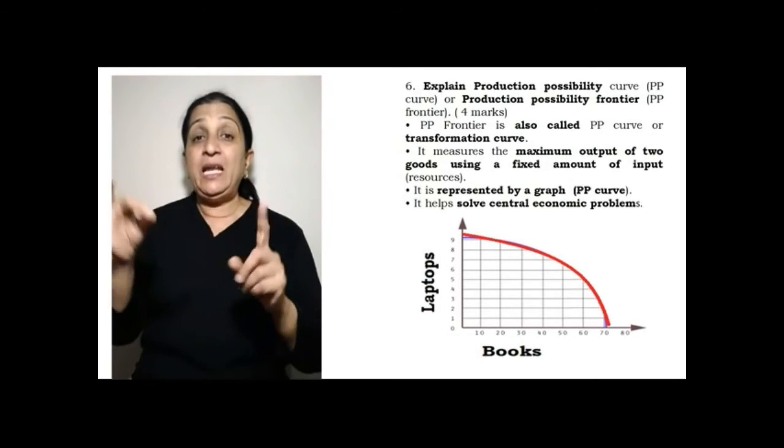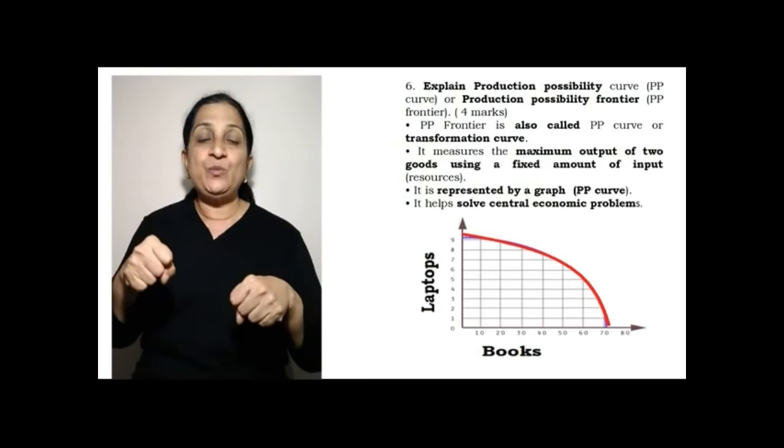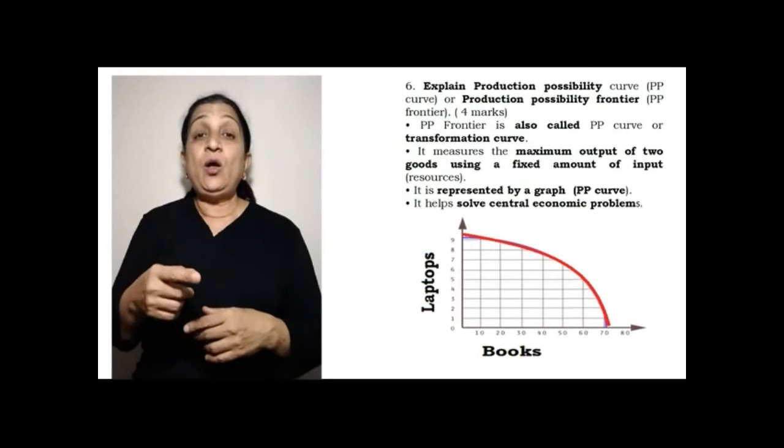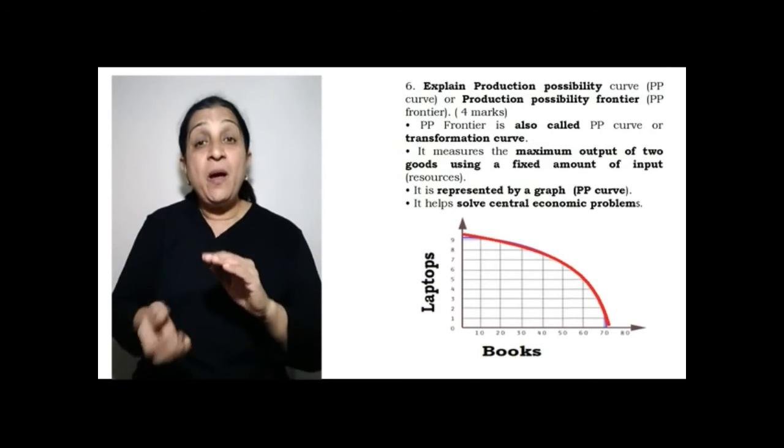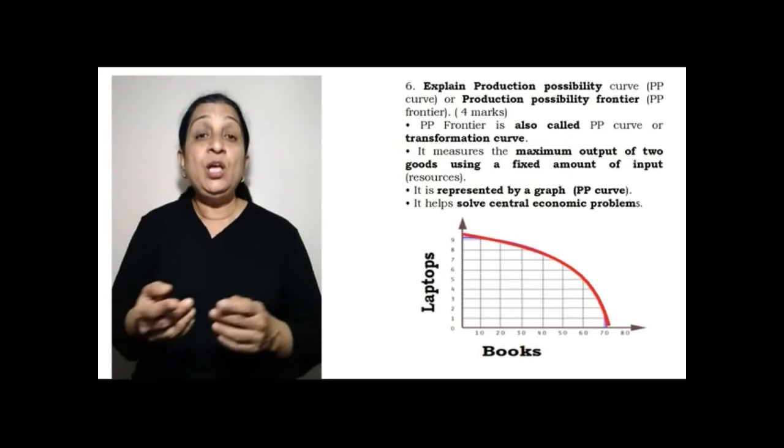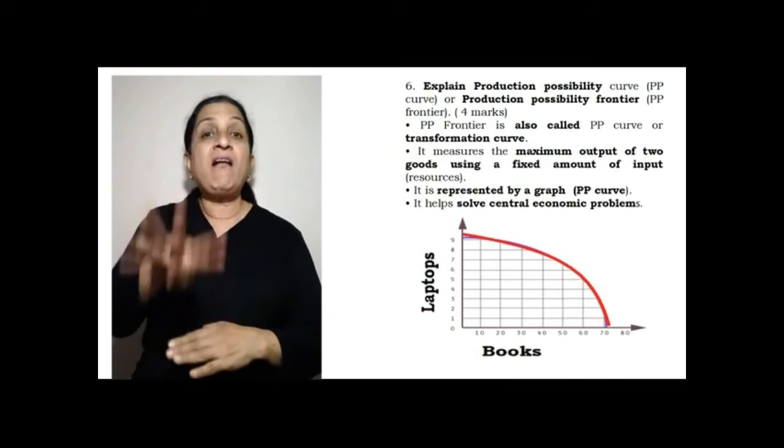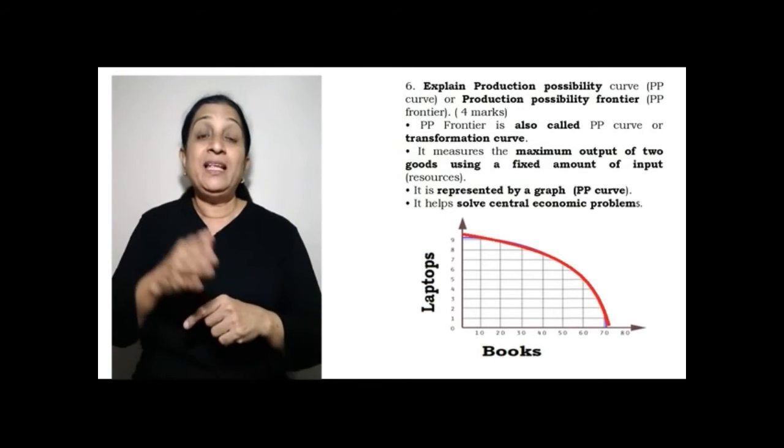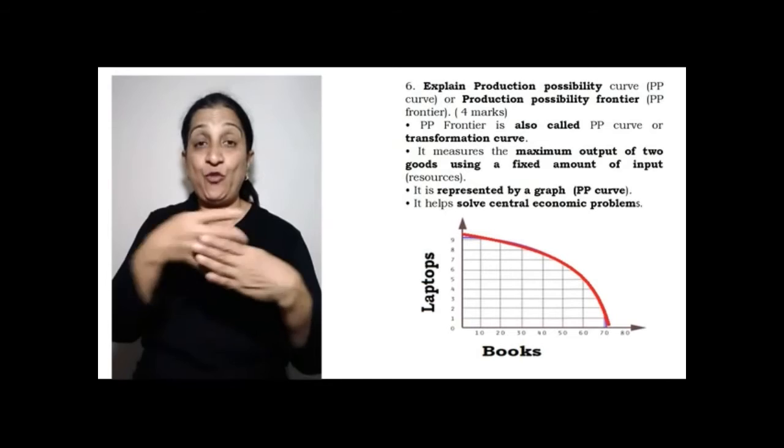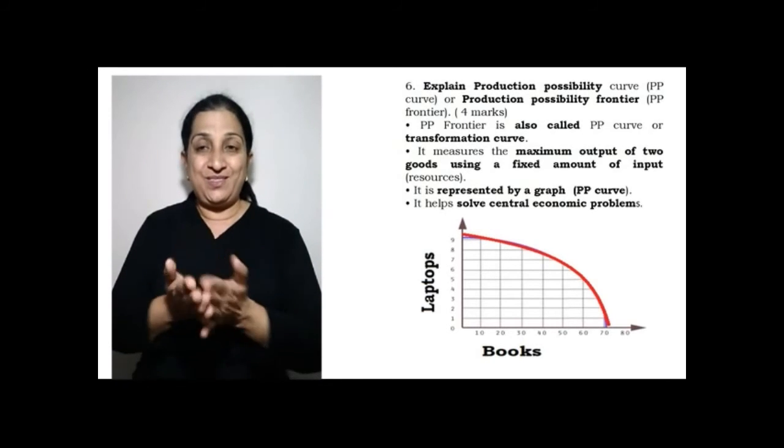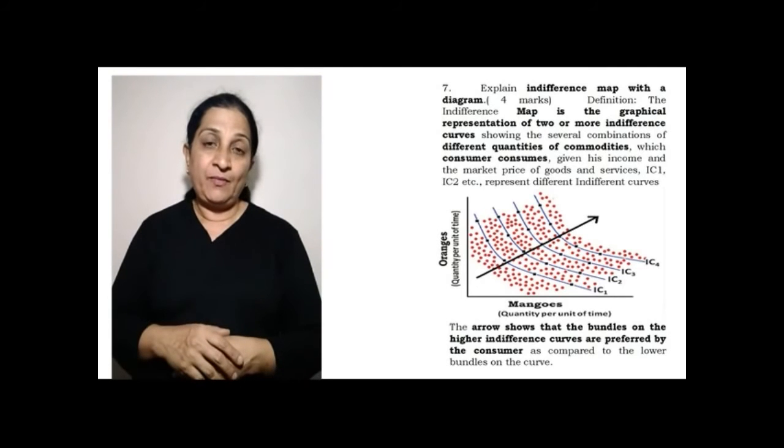Question 6: Explain the Production Possibility Curve or PPC or the Production Possibility Frontier. This is also known as the Transformation Curve. It measures the output of two things using a fixed amount of input or resources. That is shown by the graph that is called PP Curve. That solves the Central Economic Problems. For example, you have Books and Laptops, production of these two.